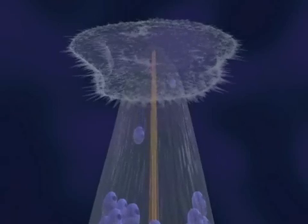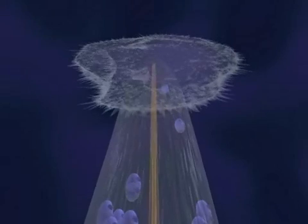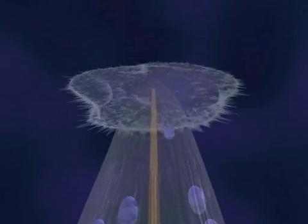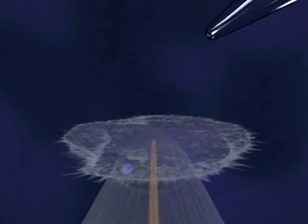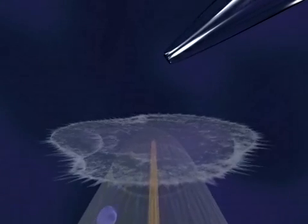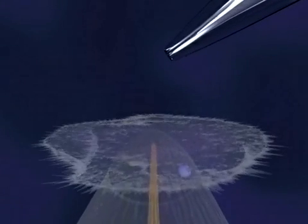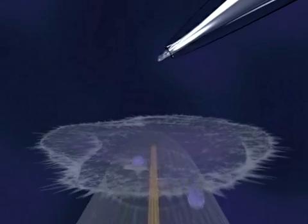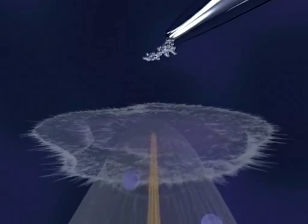To understand how mercury causes this degeneration, let us return to our illustration. As mentioned before, tubulin proteins link together during normal cell growth to form the microtubules which support the neurite structure.